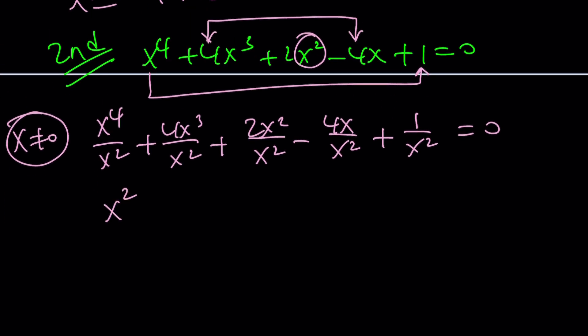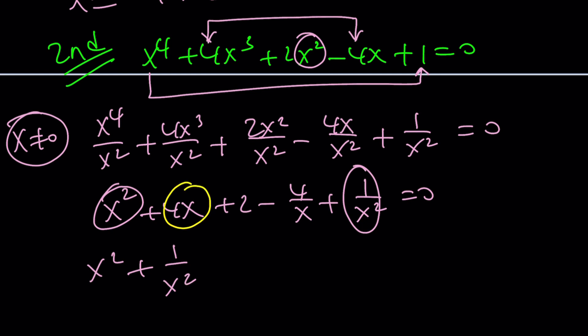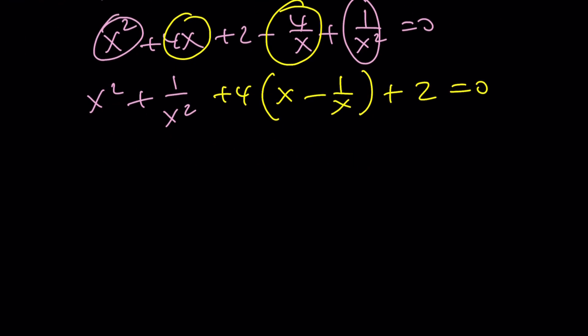Now, from here, we get something super nice. x² + 4x + 2 - 4/x + 1/x². And we'll make it nicer by putting these two together. x² + 1/x². And these two together. That's going to give us 4 times (x - 1/x). And 2 will be lonely at the end. Now, we can go ahead and write this as (x - 1/x)² plus 2ab, which is 2, plus 4 times this. Plus 2 = 0.